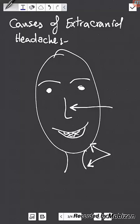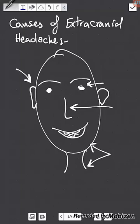Another cause is the nasal sinuses — any inflammation of the nasal sinuses will refer pain to the skin of the head, causing extracranial headache. The eye is also a cause: errors of refraction, not wearing glasses, or glaucoma can cause extracranial headache. The ear is another cause — otitis media or external otitis may cause extracranial headache. A very common cause is toothache, which refers pain to the skin of the head.